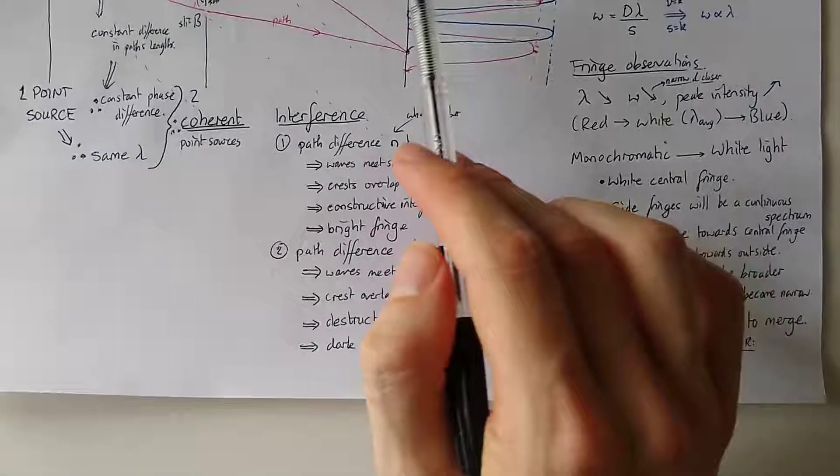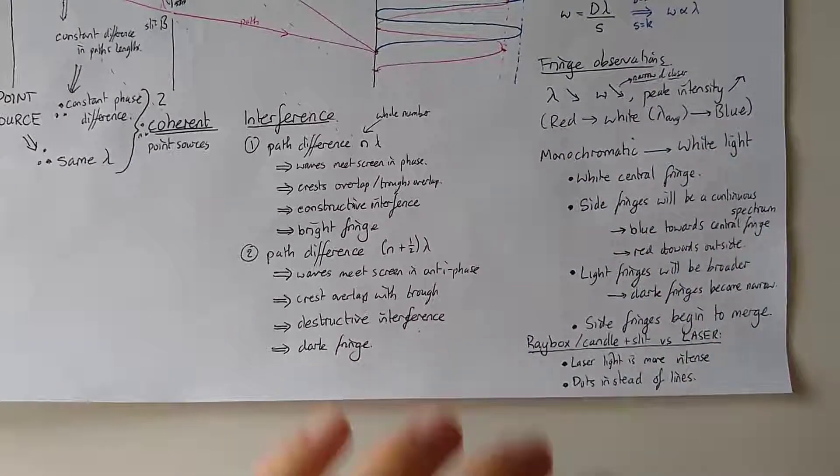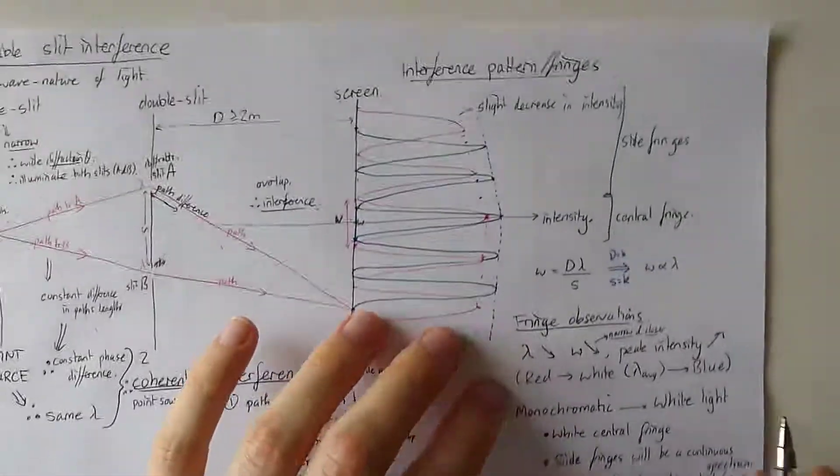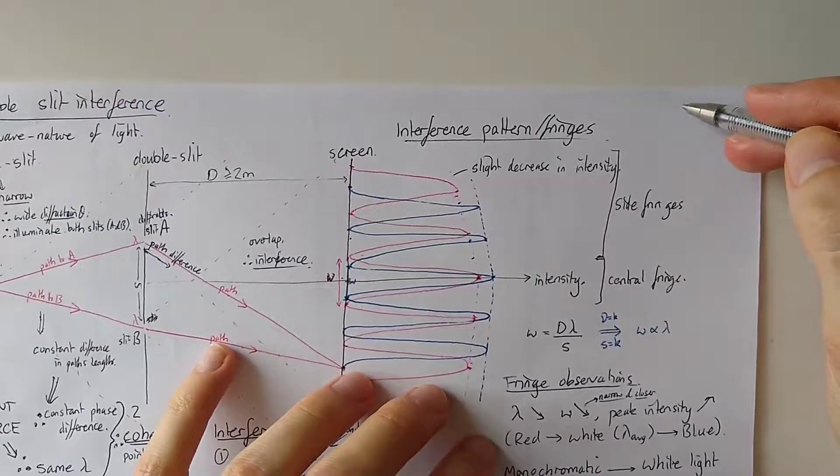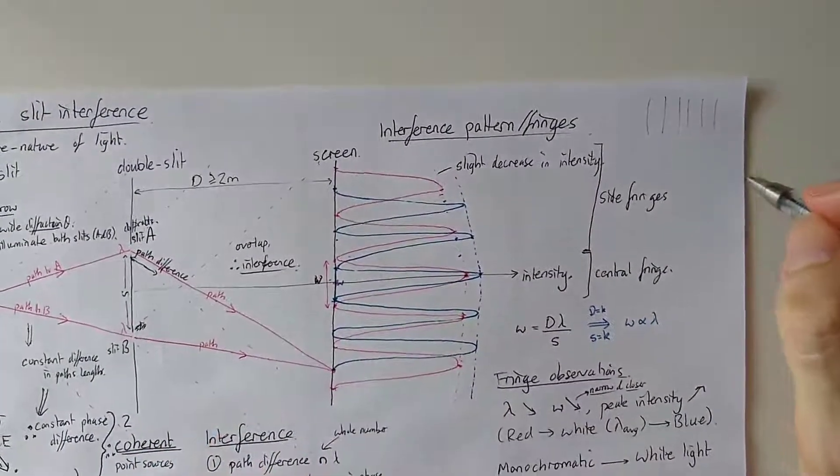And you can sometimes get dots instead of lines if you used something which emits a dot. When we say lines, we're not talking about lines here, because this is the intensity axis. Normally what you would actually view would be a series of lines like this on a wall. A bit like a barcode, but more symmetrical.